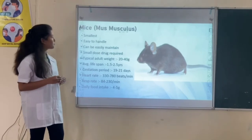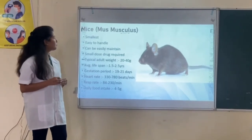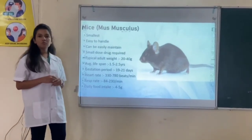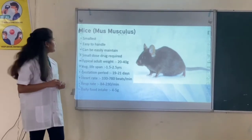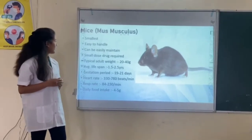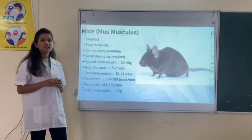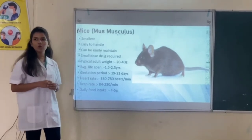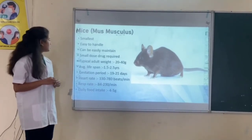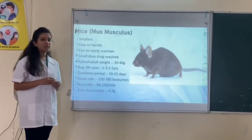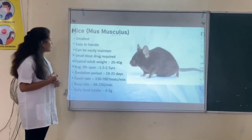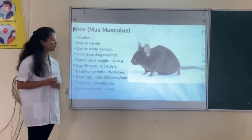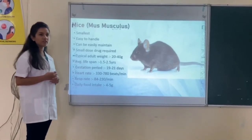First is mice. The scientific name of mice is Mus musculus, and it is the smallest laboratory animal. It is easy to handle and can be easily maintained. It requires a very small dose of drugs. The typical adult weight of mice is 20 to 40 grams. The average lifespan of mice is 1.5 to 2.5 years.